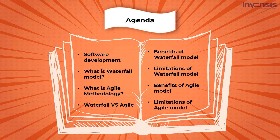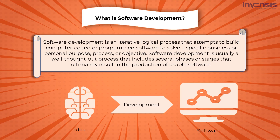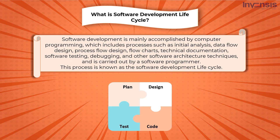So let's get this session started. What is software development? Software development is an iterative logical process that attempts to build computer coded or program software to solve a specific business or personal purpose, process, or objective. It includes phases such as initial analysis, data flow design, process flow design, flow charts, technical documentation, software testing, and debugging. This process is known as the software development life cycle.